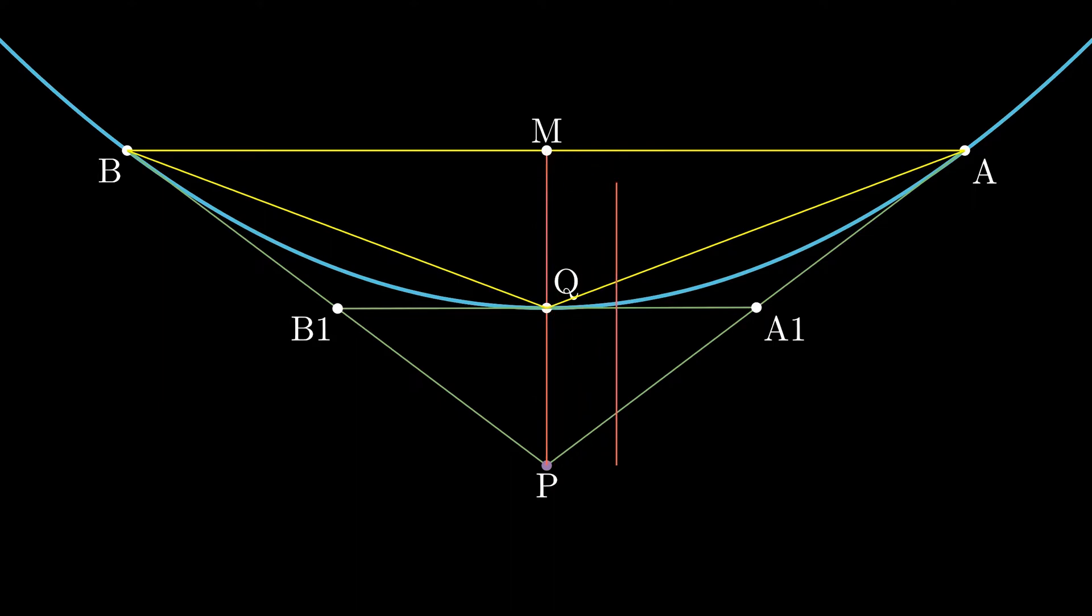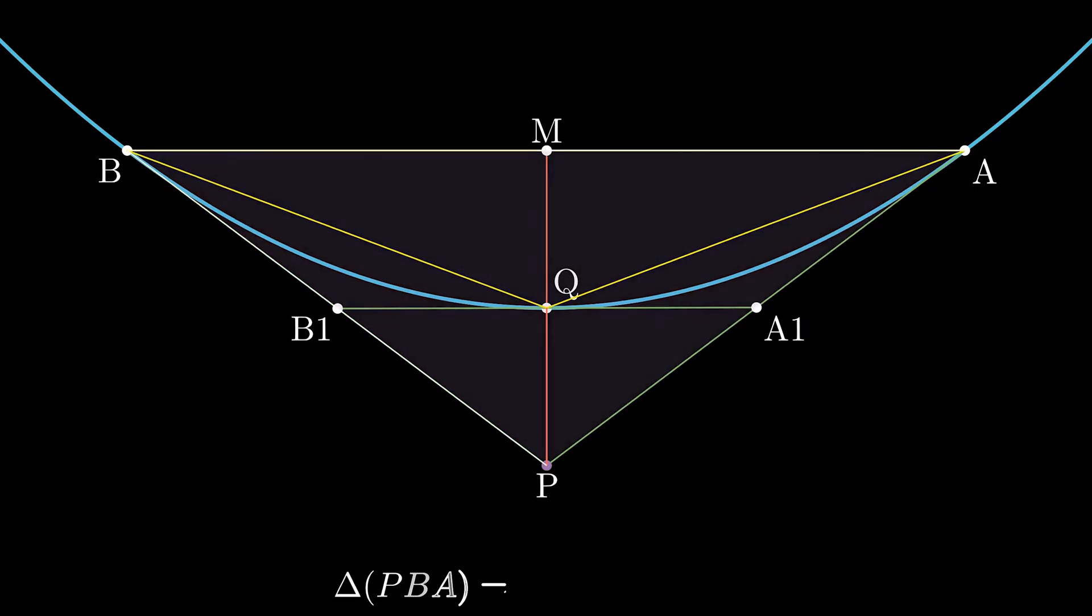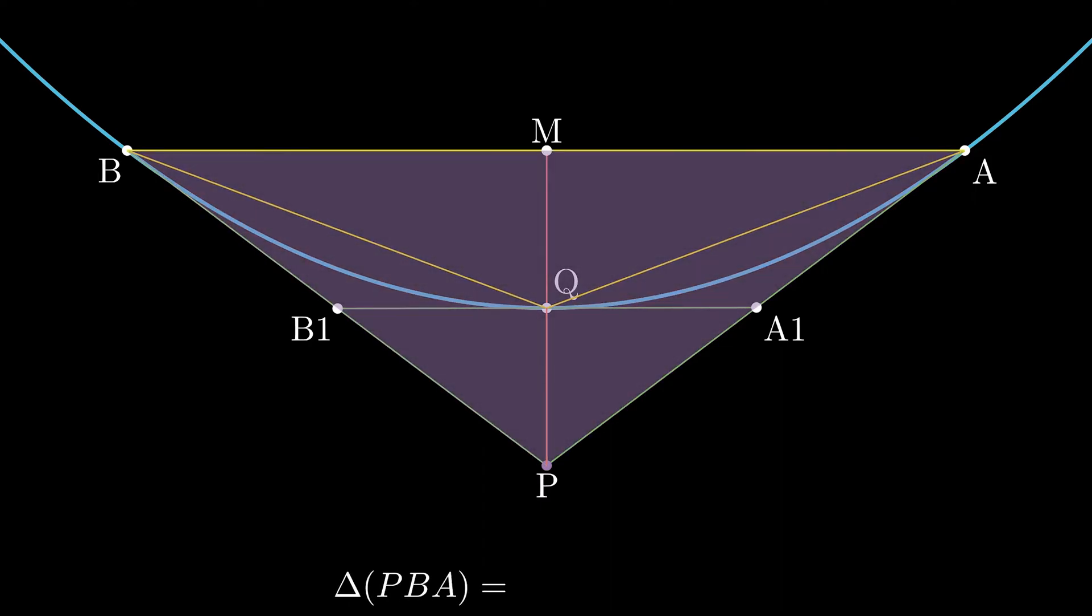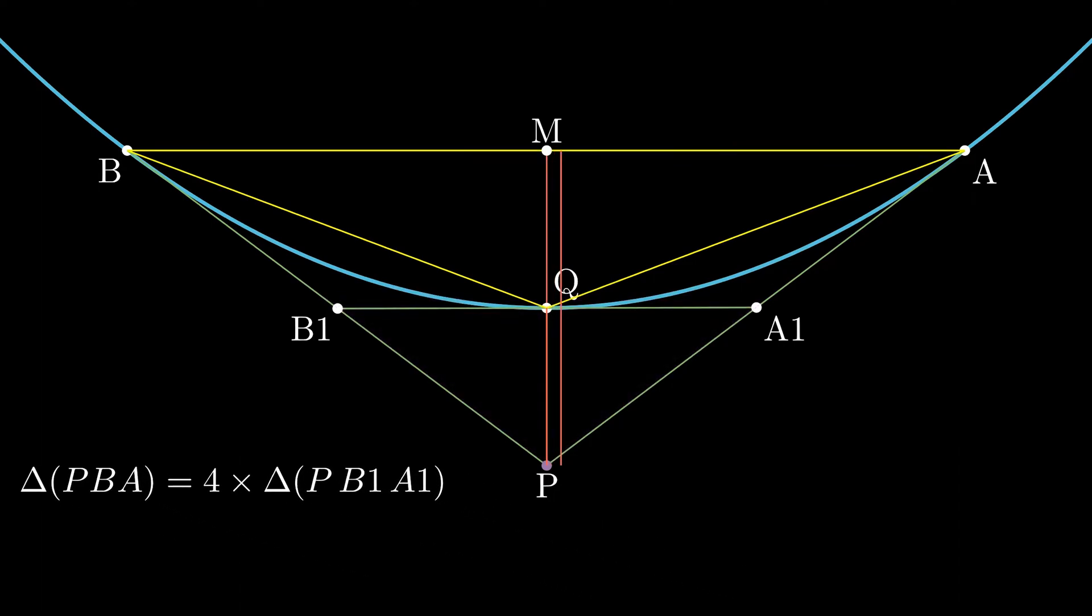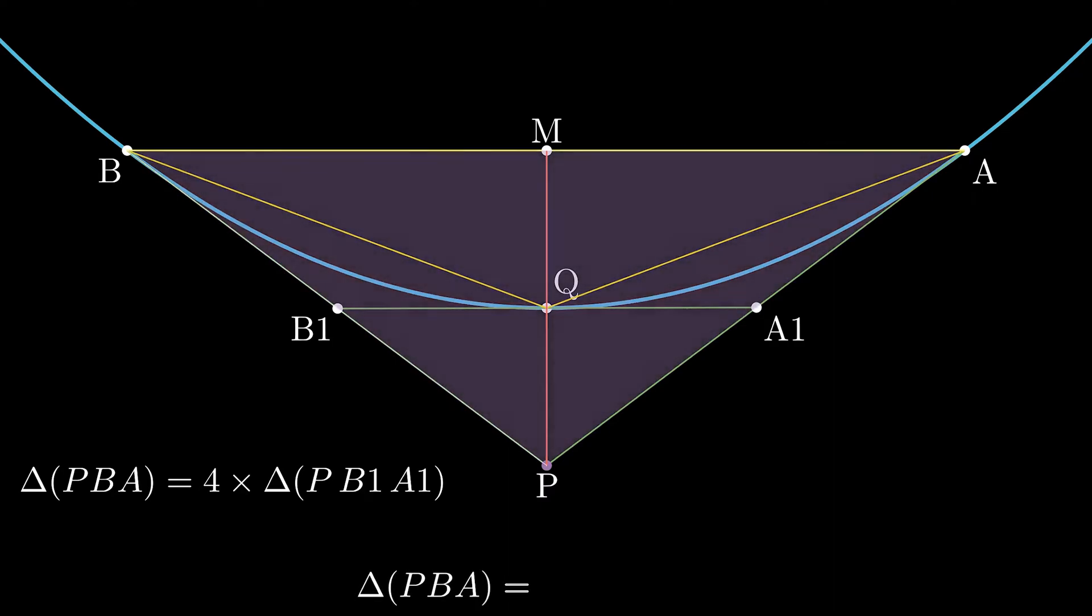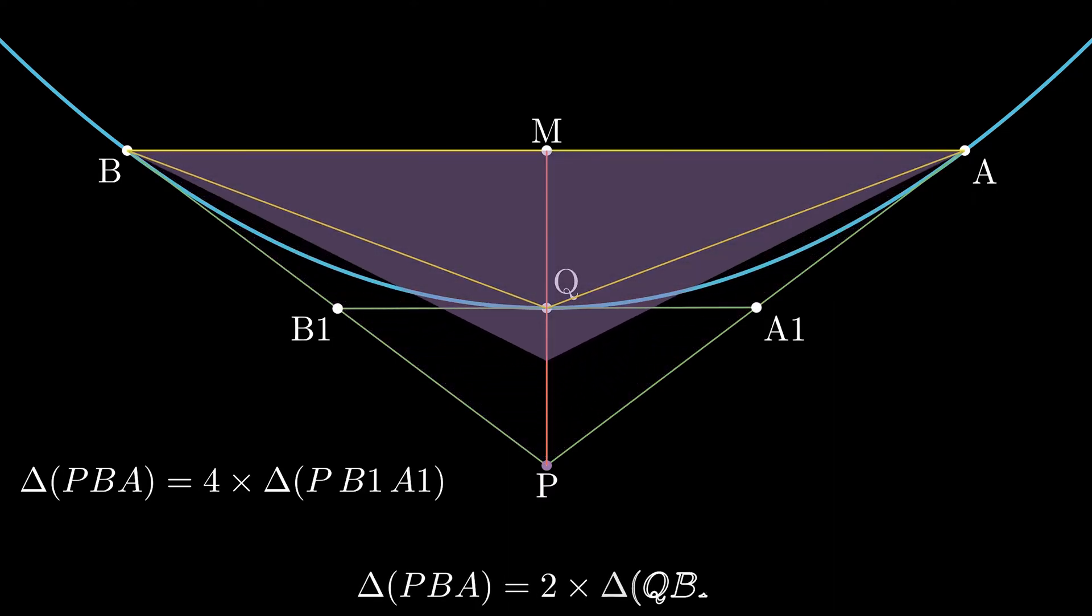So, the height and base of the triangle PB1A1 is half of that of PBA, which means the area of triangle PBA is 4 times the area of triangle PB1A1. And similarly, the height of triangle QBA is half of that of the triangle PBA. Therefore, the area of the triangle PBA is twice that of the triangle QBA.